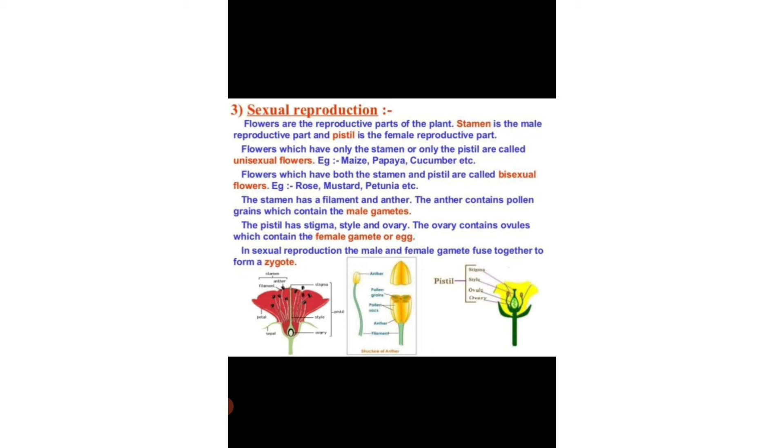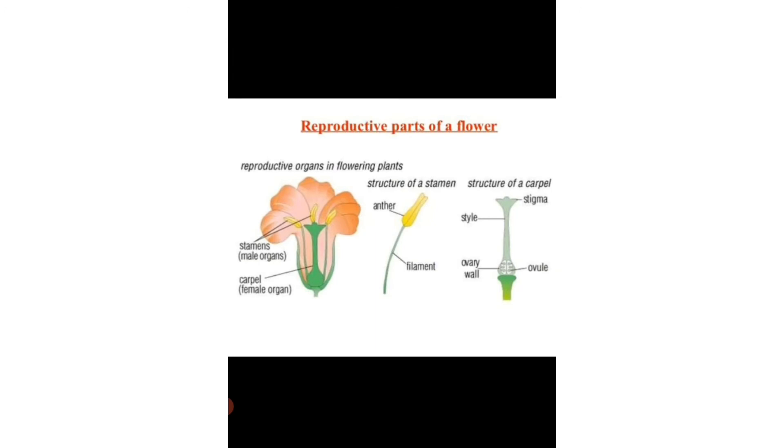In sexual reproduction, the male and female gametes fuse to form a zygote. So here are the reproductive parts of a flower. You can have a look at the structure of a stamen and the structure of a carpel.